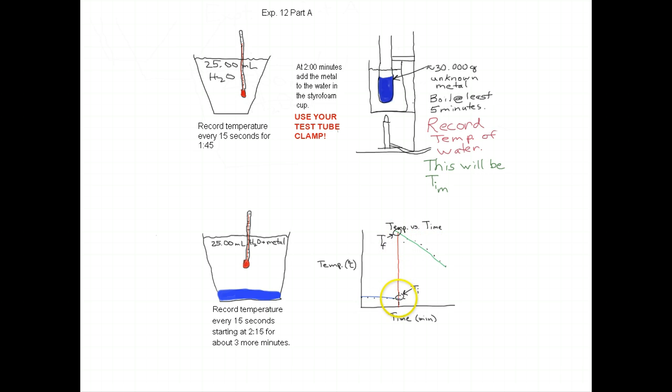Where the blue line touches the red line, that's the initial temperature of the water. Where the green line touches the red line, that's the final temperature of both the metal and the water.